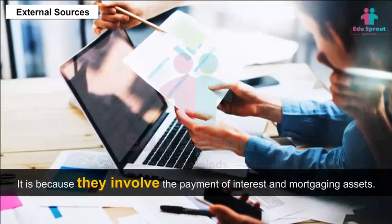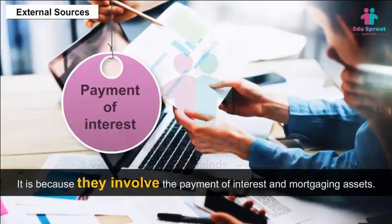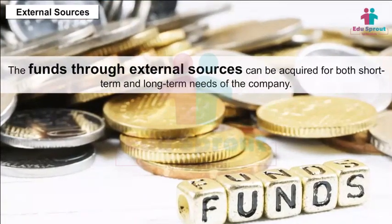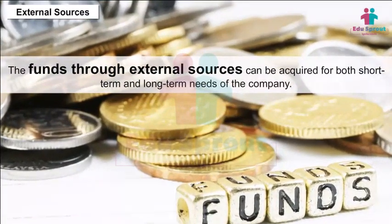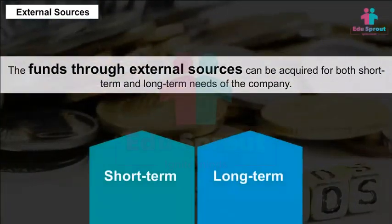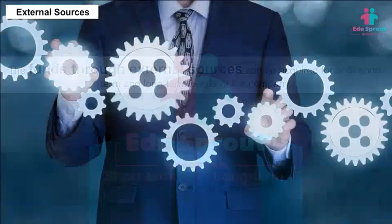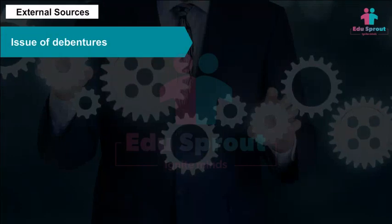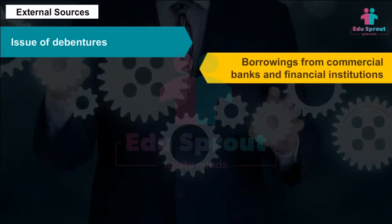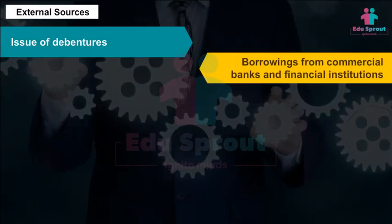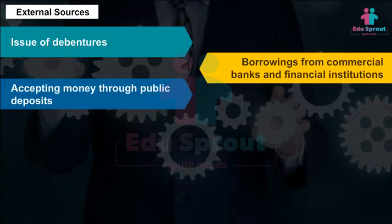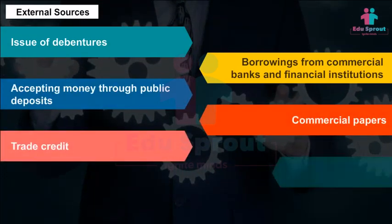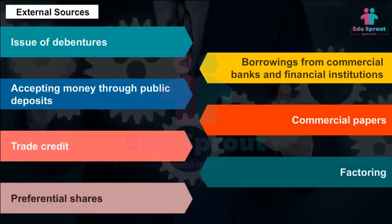Companies rely on external sources when there is a need for raising large sums of money. These funds are often costly compared to internal sources because they involve payment of interest and mortgaging assets. External sources can be acquired for both short-term and long-term needs. The common external sources are the issue of debentures, borrowing from commercial banks and financial institutions, public deposits, commercial papers, trade credit, factoring, and preferential shares.